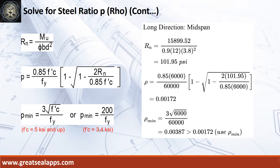Given long direction, mid-span moment equals 15,899.52 inch-pounds. Resistance factor equals 0.9, b equals 12 inches, and d equals 3.8 inches. The beam design ratio RN equals 101.95 PSI and reinforcement ratio rho equals 0.00172. Use rho minimum of 0.00387.